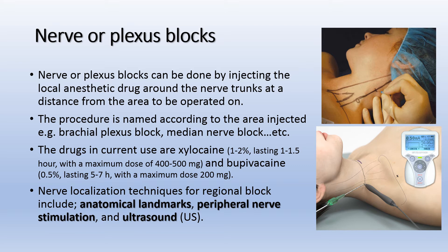Nerve localization techniques for neural block include: anatomical landmark, peripheral nerve stimulator, and ultrasound. The peripheral nerve stimulator apparatus uses a needle to perform the procedure, and the technique can also be performed using ultrasound guidance.